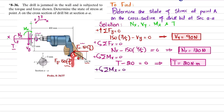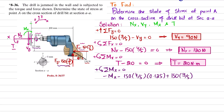The third moment is the vertical force FY times perpendicular distance of 400 mm. So: minus MZ, minus 150 × (4/5) × 0.125, plus 150 × (3/5) × 0.400 equals zero. Solving this, the moment about the Z axis MZ equals 21 Newton-meter. We now have all the reaction forces, reaction torque, and moment.